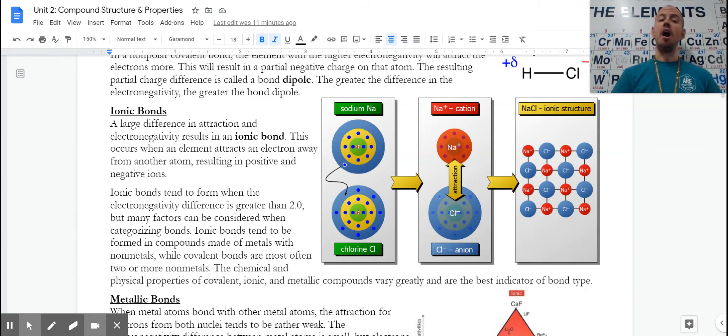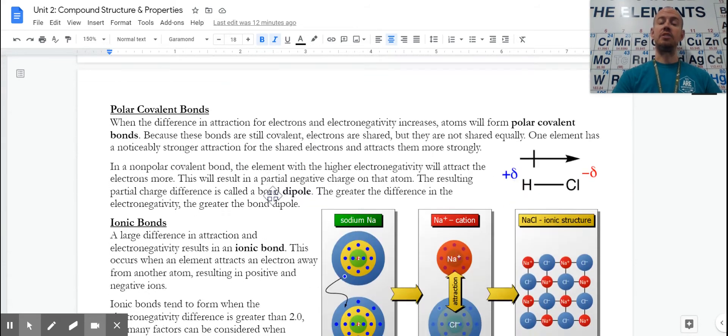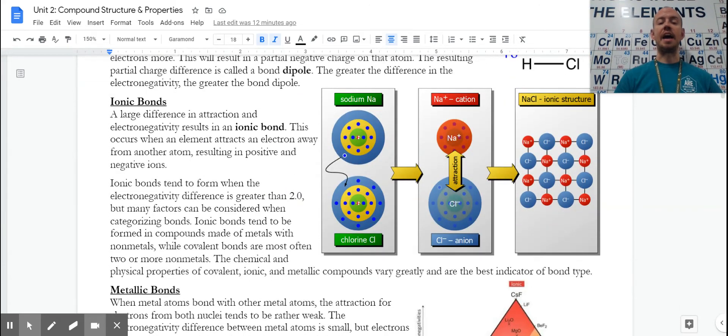That means one thing, our nonmetal has a much higher attraction for electrons than our metal. With sodium and chlorine coming back up here, we have 3.0, we have 0.9. That is a 2.1 difference. That's big enough that not only are they sharing, but chlorine is totally gaining the electron. The sodium totally loses it. That exchange of electrons is important, and it actually happens in a few steps that we'll see coming up.